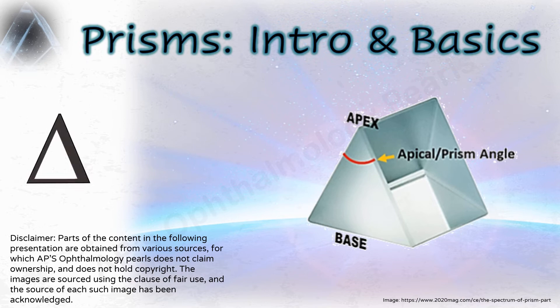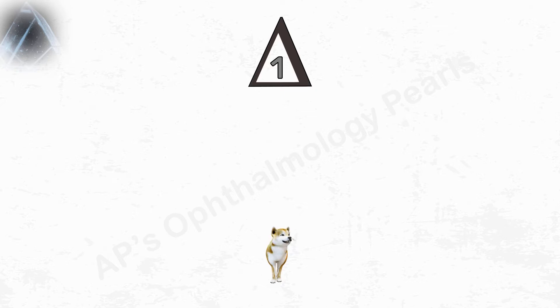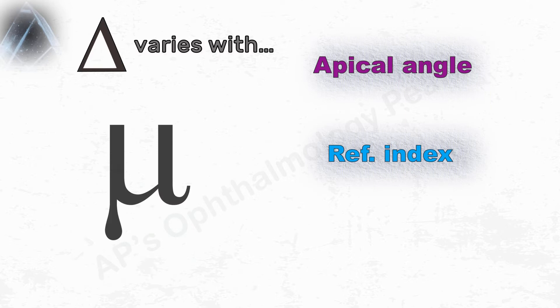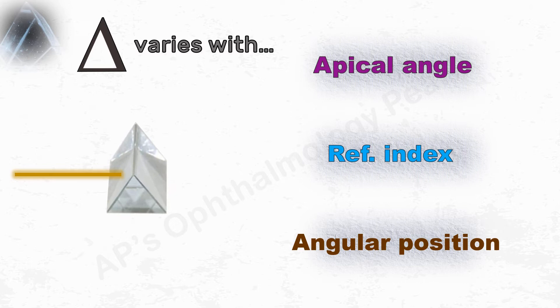One prism diopter produces a displacement of one centimeter of the image of an object that is one meter away. The power is a function of the apical angle, but also varies with the refractive index of the prism and its angular position with respect to the incoming light rays.